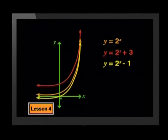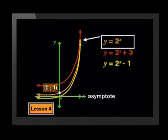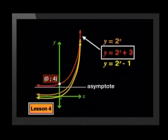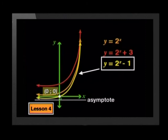These graphs all have an a-value of 1 but different q-values. The one in the middle is the parent graph, y equals 2 to the power of x, with a y-intercept of 1 and an asymptote on the x-axis where y equals 0. The parent graph has shifted up by 3 units to give y equals 2 to the power of x plus 3, which intersects the y-axis at 0, 4, and has its asymptote shifted up to y equals 3. And shifting down by 1 unit gives y equals 2 to the power of x minus 1, intersecting the y-axis at 0, 0, with asymptote at y equals negative 1.